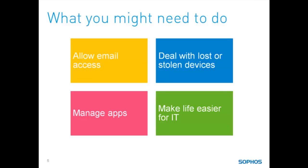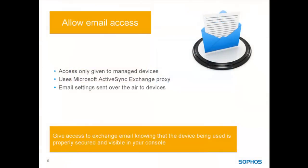Here's how we can do this with Sophos Mobile Control. Users want to be able to read corporate email while away from the office — it means managing their email takes less time, and that can help to make them more productive. Many organisations are already doing this, but giving email access to one person on their personal device means giving access to everyone. Our mobile control software only allows registered devices to connect to corporate email servers, and sends those settings to that mobile so they're ready to go.